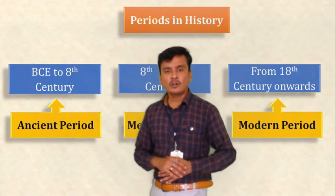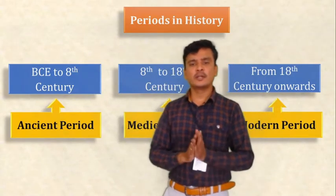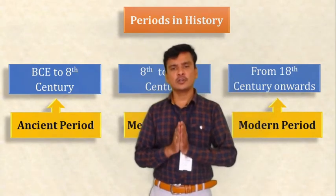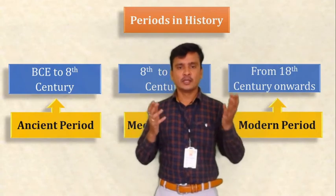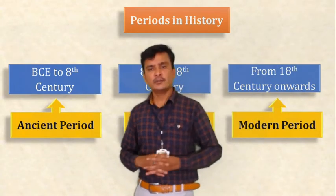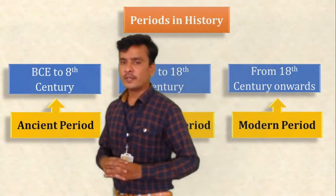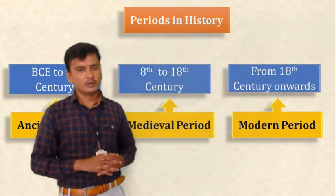For better understanding and better study, historians have divided history into three periods: the ancient period, the medieval period, and the modern period.